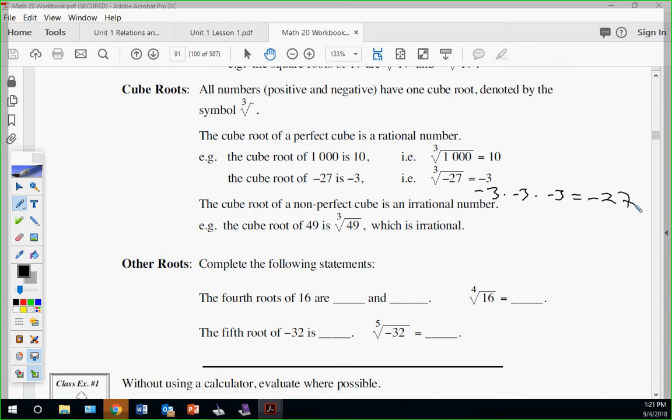Cube root 49 we can't break down, so it stays as is. Fourth roots of 16 are 2 and negative 2. The fifth root of negative 32 is negative 2. Why does the fifth root only have one root? Because it's odd, correct. Good, is that clicking?